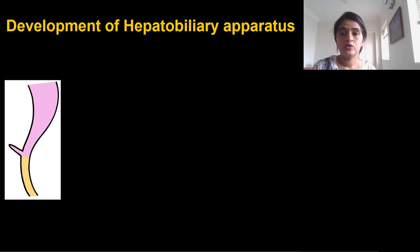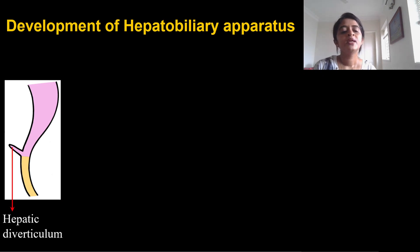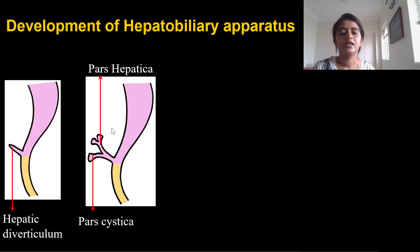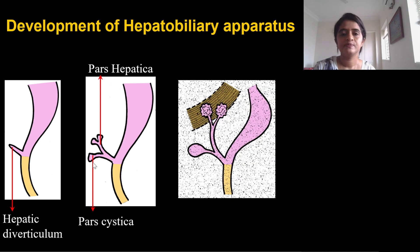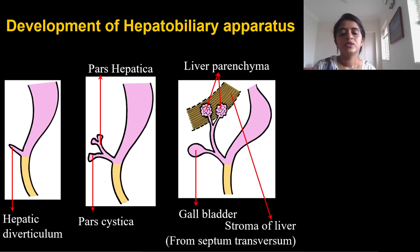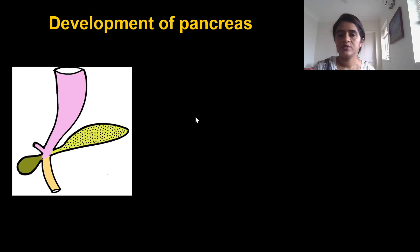Regarding the hepatobiliary apparatus: a hepatic diverticulum arises from the junction of the foregut and midgut, then divides into two buds — pars hepatica and pars cystica. Pars hepatica forms the liver parenchyma and pars cystica forms the gallbladder. The stroma of the liver is derived from the septum transversum.